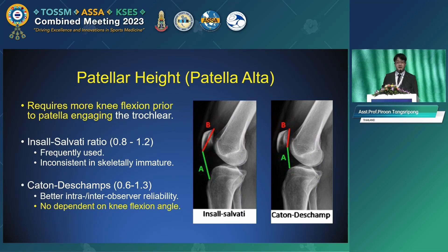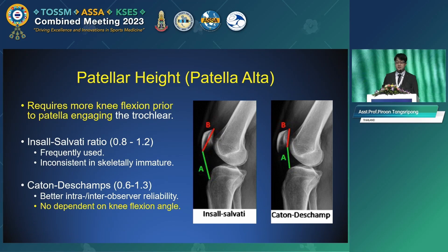Patella alta requires more knee flexion prior to the patella engaging the trochlea. Frequently used soft tissue ratios are inconsistent in skeletally immature patients. The Caton-Deschamps ratio offers better intra- and inter-observer reliability and is not dependent on knee flexion angle.